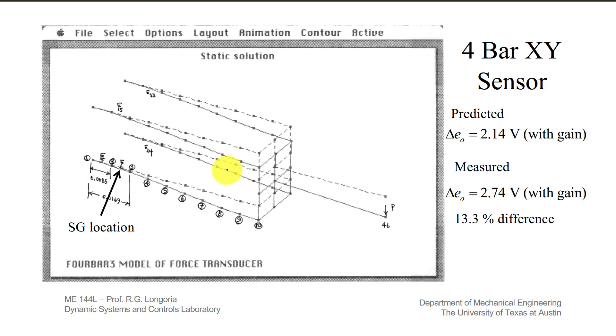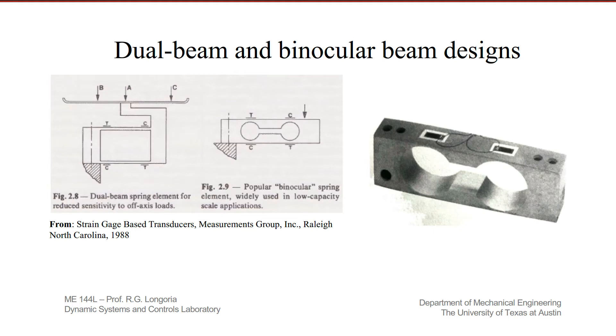And here's some analysis I did a long time ago, finite element analysis to show that the strain that I'd get where those gauges were located for an applied load would give me enough output voltage, using the same principles that we've talked about in the other videos.